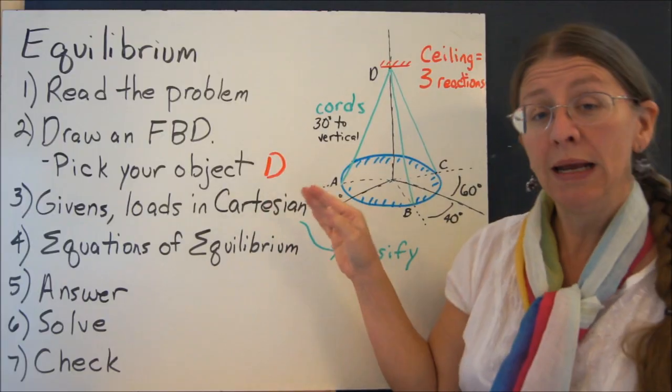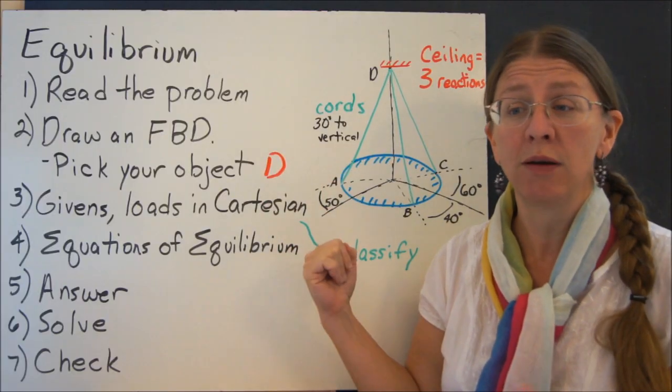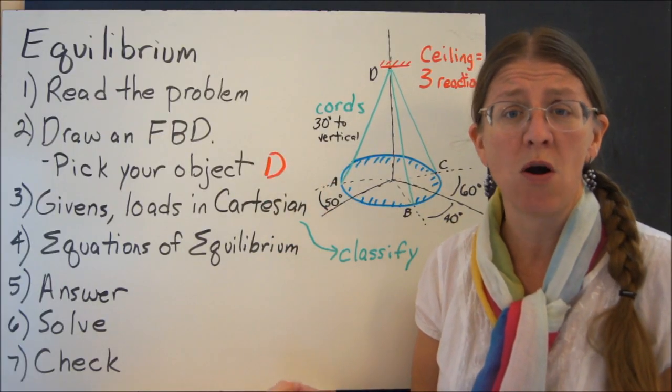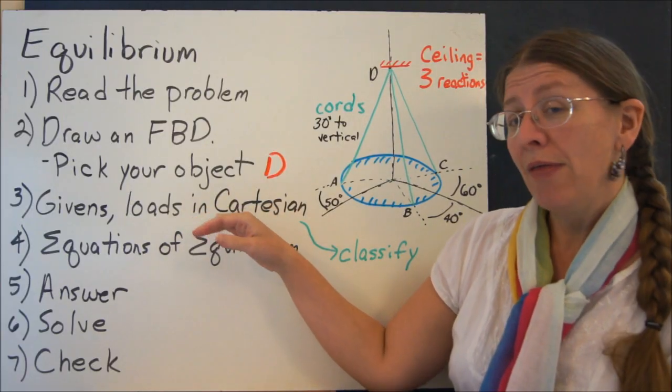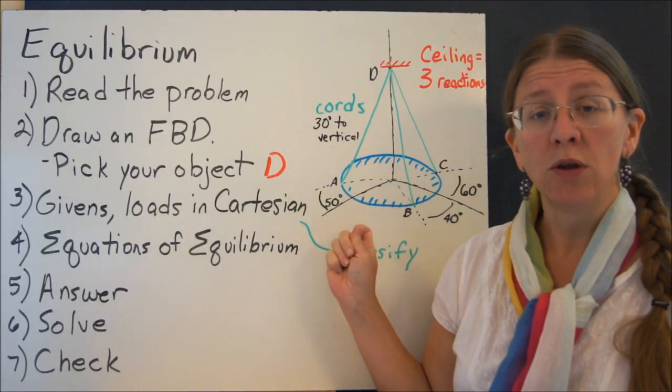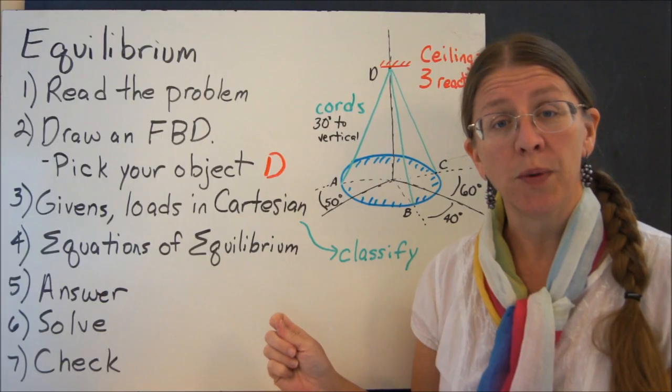Now, in reading this particular problem, you'll see that two of them you can set equal to zero. But all three should still exist on your free body diagram. Once you've got that, you want to find out what your loads are and get them all into Cartesian form.